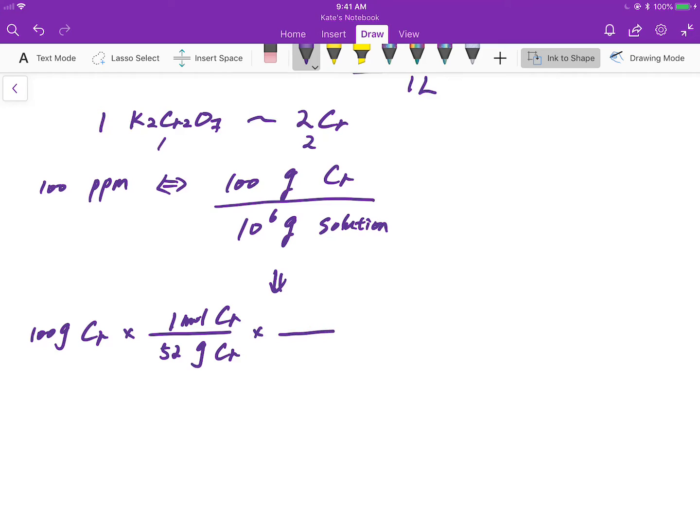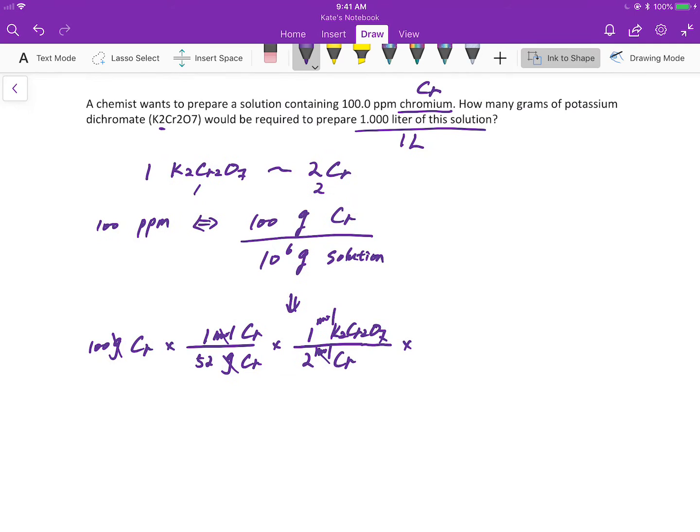Now we can do the relationship. For every potassium dichromate molecule, there's two moles of chromium. Again, this is moles. So we cancel out the grams, we cancel out the moles. Now we have moles of potassium dichromate, but the question is asking for how many grams of potassium dichromate.